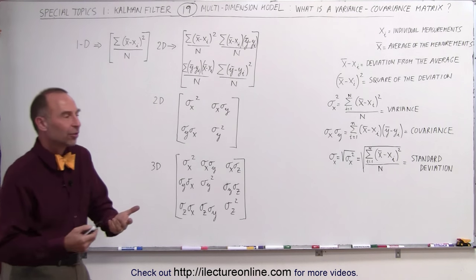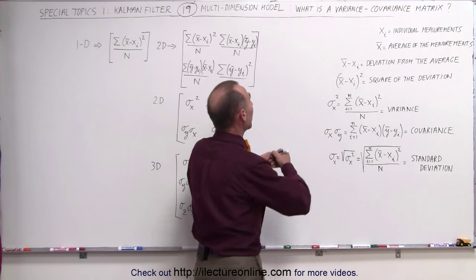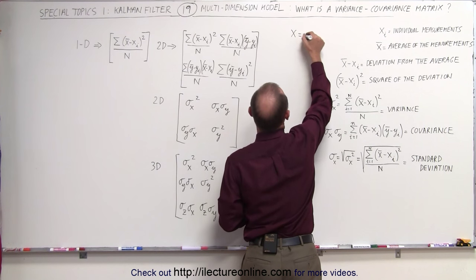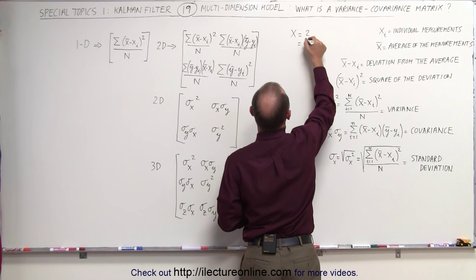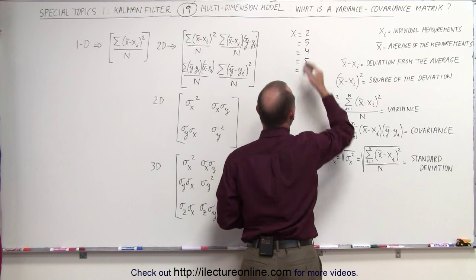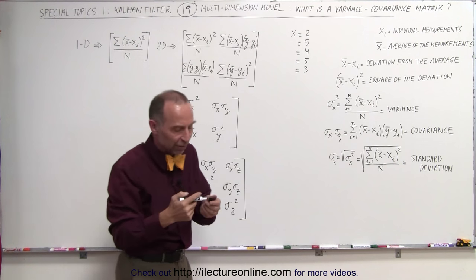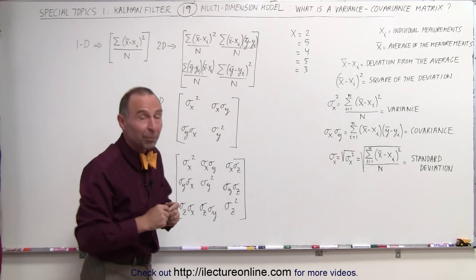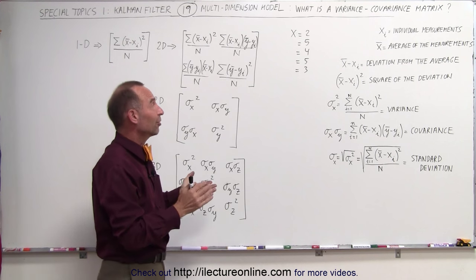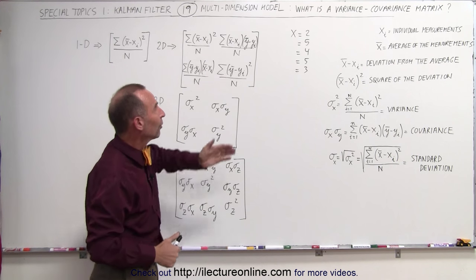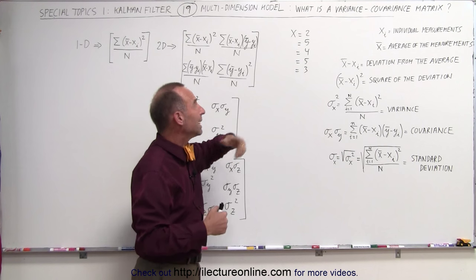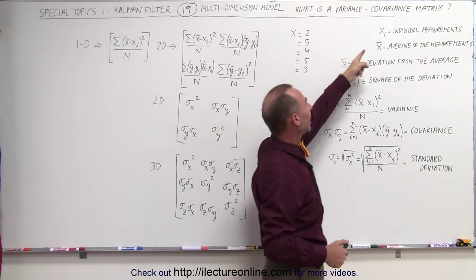Let's say we have a bunch of values that we measure. Let's say we measure the length of an object, and we come up with some values such as x equals 2, x equals 5, x equals 4, x equals 5, x equals 3, and so forth. We get different values when we read something. We have 5 measurements, 5 different values, and each individual value can be considered x sub i.